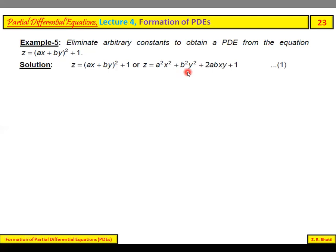Expanding the square so that taking the derivative becomes easier. Now, differentiating partially with respect to x, when y is treated as constant, we get z_x = 2a²x + 2abxy.